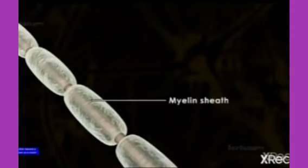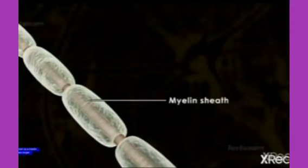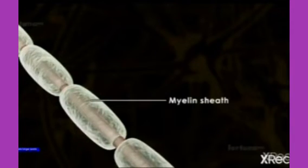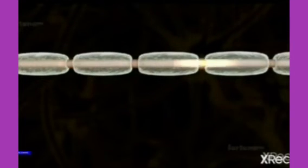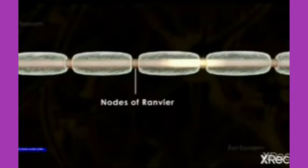They are covered with myelin sheaths. There are gaps in the myelin sheath known as nodes of Ranvier.